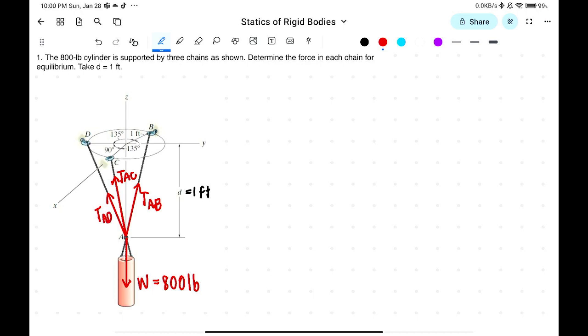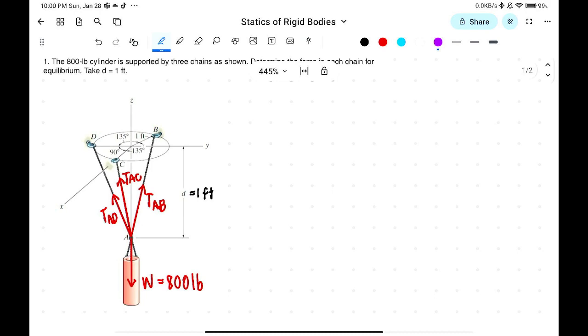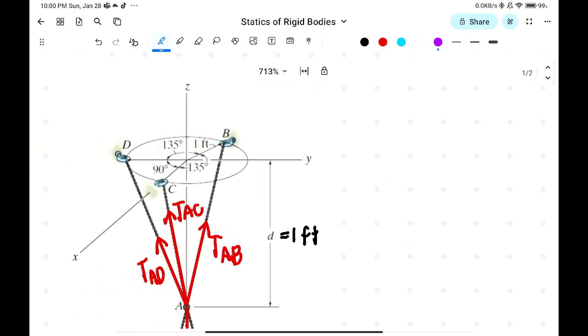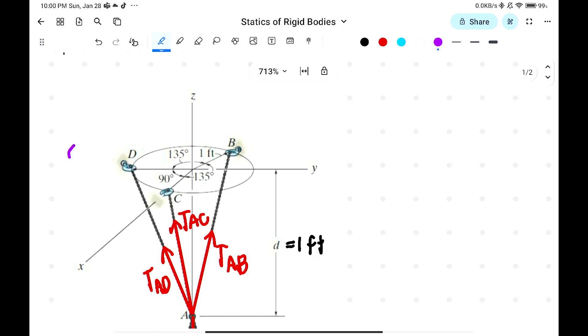When solving 3D problems, assign coordinates to each point. First coordinate is point D. The x-coordinate is 0. This is positive x. That is 0. And then, y is negative 1. And z is 0. Cartesian plane, 3D. Then point C is 1, 0, and 0.